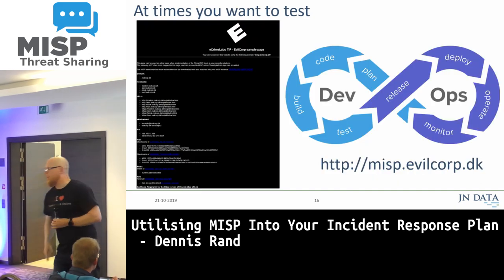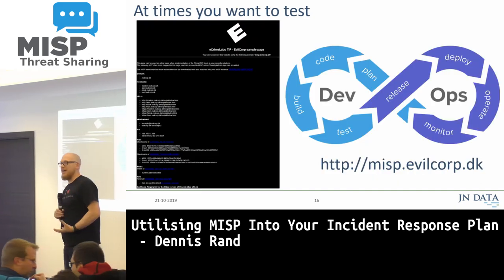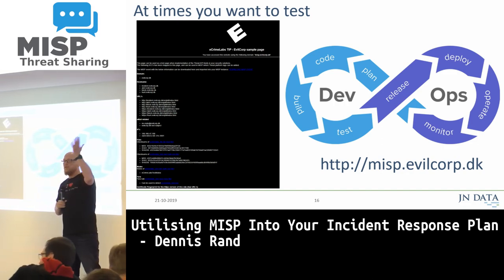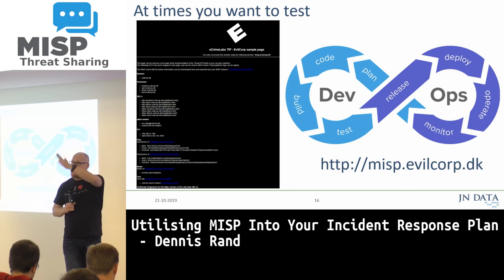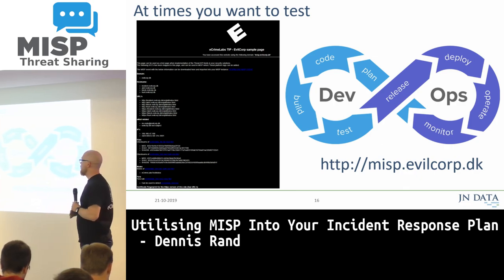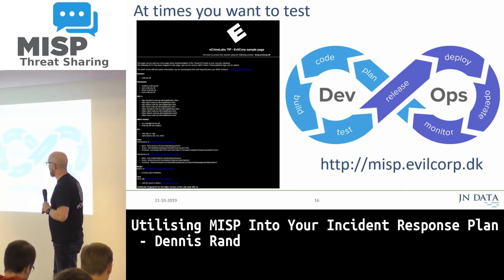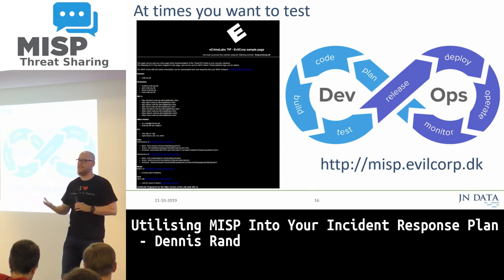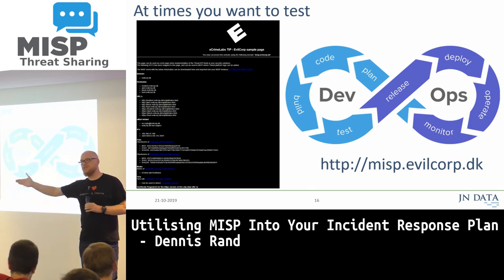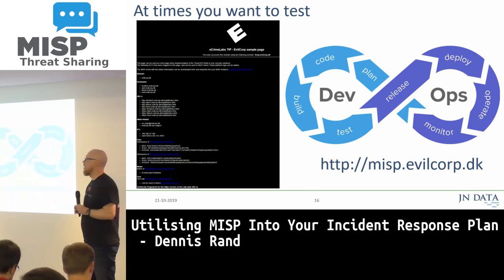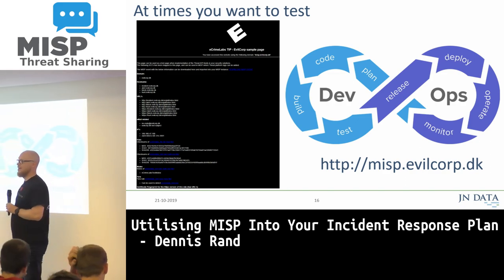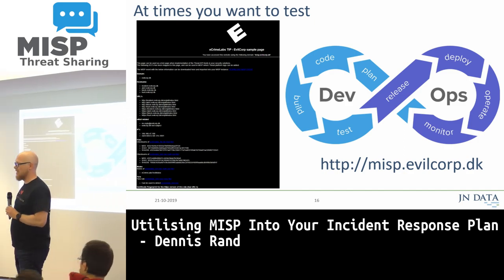One of the troubles we had was how do you test it? It's not like just taking some newspaper site and start blocking to see if the entire chain works. So I created a small website called EvilCorp.dk, where I have a lot of indicators around this website — like binaries that are not malicious in any way — but can be used to test this entire flow if you want to work with it.